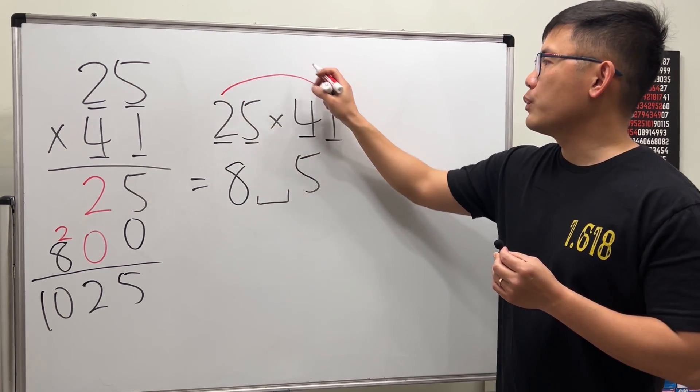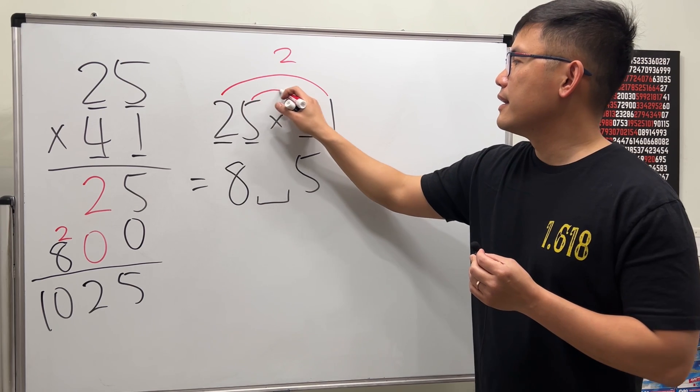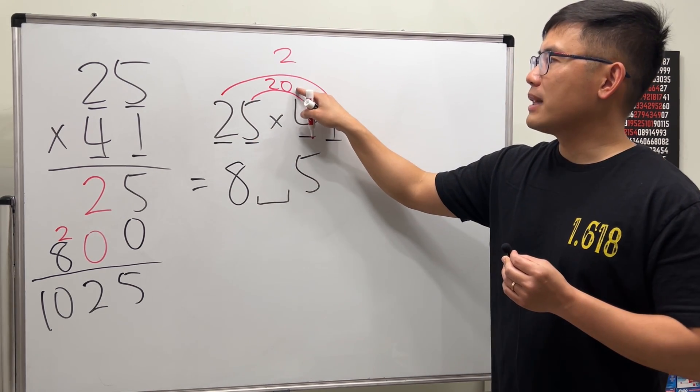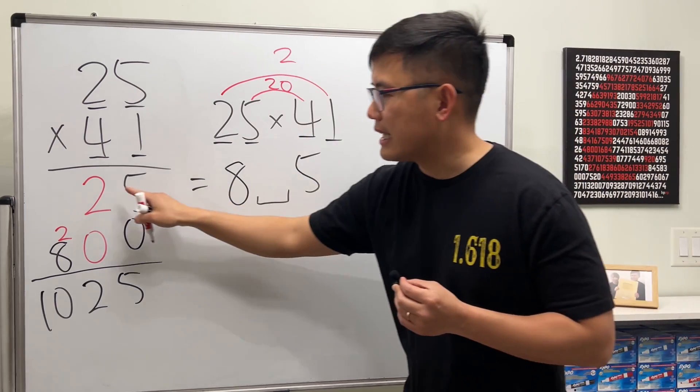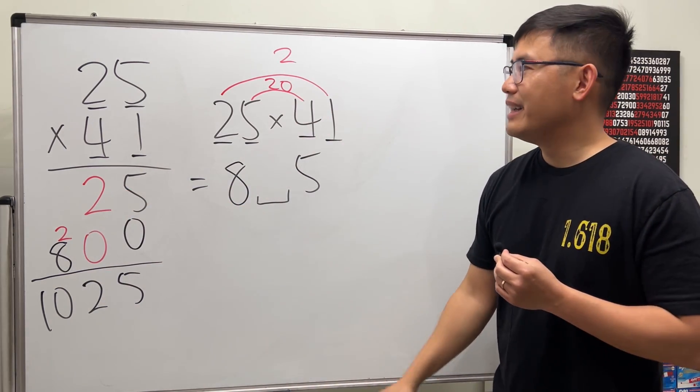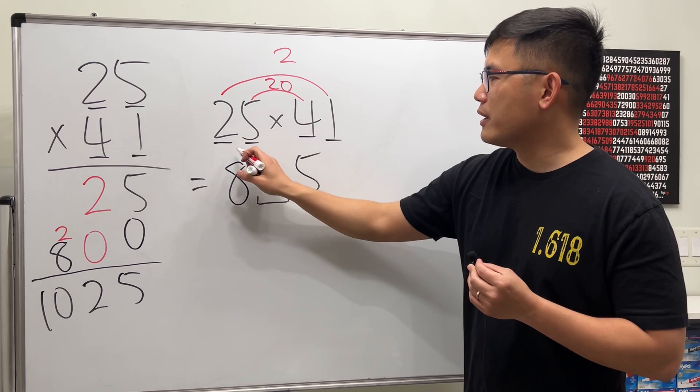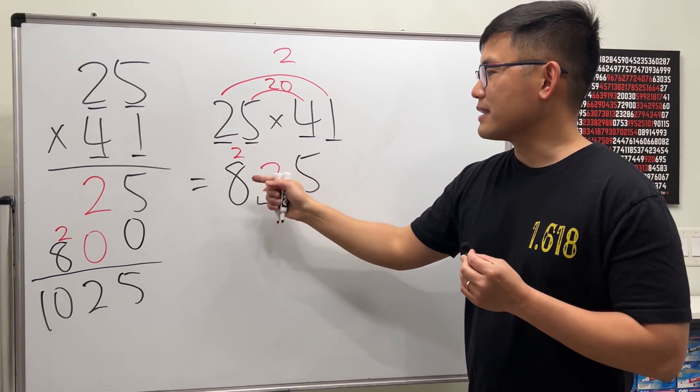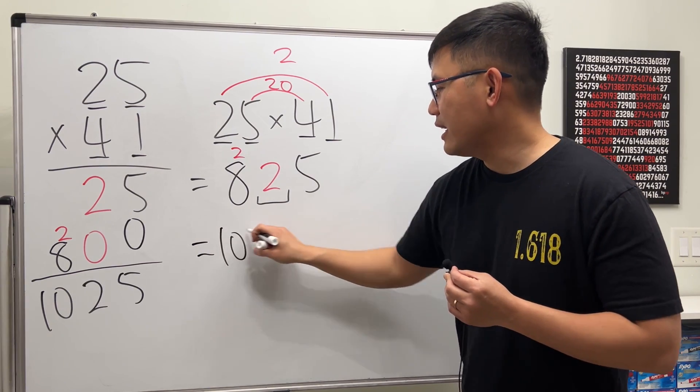5 times 4 which is 20. 2 plus 20 is 22, and that's exactly 22 in red right here as well. So we are going to put 22 here. As this, 2 plus 8 is 10, so 1025.